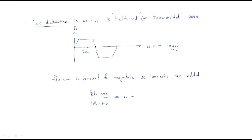The flux distribution in a DC machine is a flat-top trapezoidal wave. B means flux density — flux per unit area — that is B equal to flux per area, with units of Weber per meter square. In DC machines, the flux waveform follows a flat-top wave, also called the trapezoidal wave, with respect to the air gap.